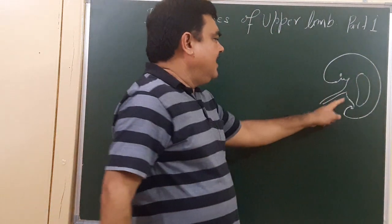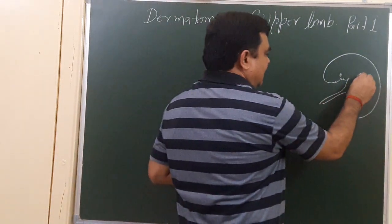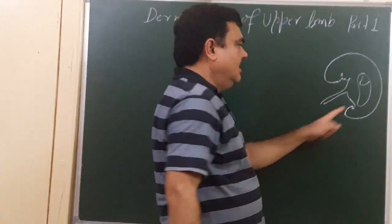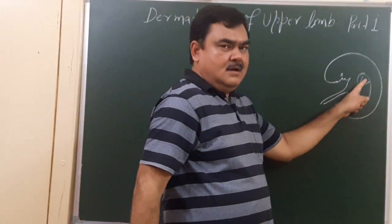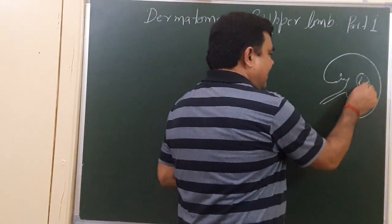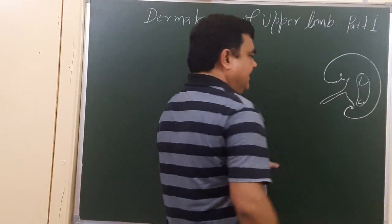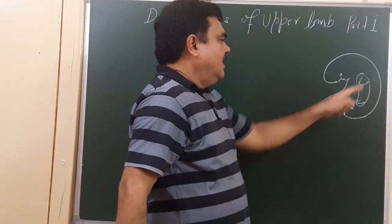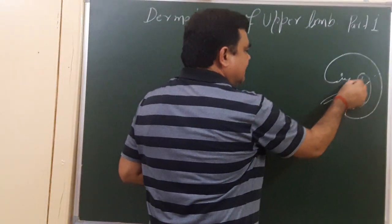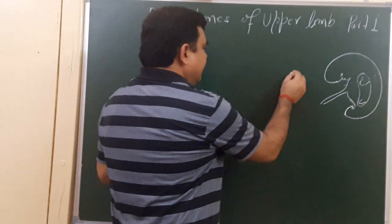This is a developing embryo. Here is the developing upper limb bud, and here is the lower limb bud. If you take a section at this level, you will find...